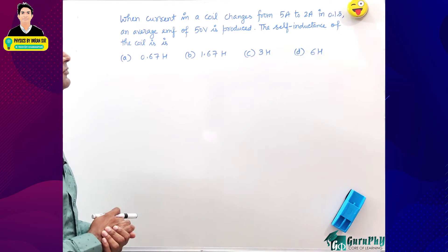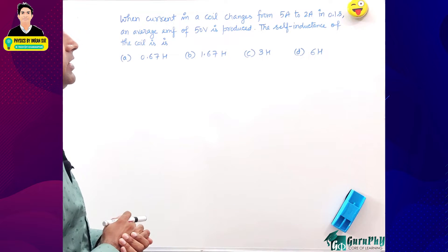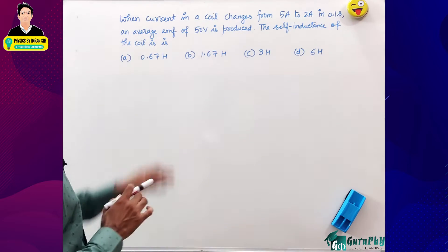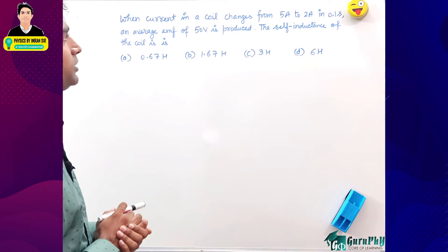When current in a coil changes from 5 ampere to 2 ampere in 0.1 second, an average EMF of 50 volt is produced.